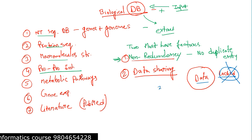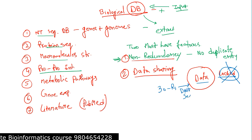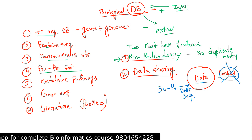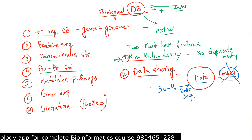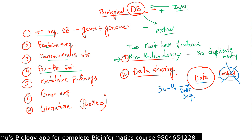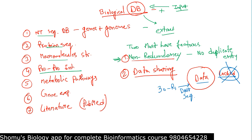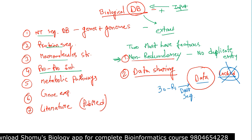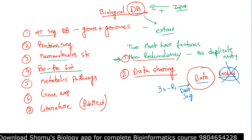For example, a group of 30 scientists put some DNA sequencing data into a database, and five years later another group finds something wrong with the earlier data — they should be able to update it. That is data sharing. So a database is a collection of data which is structured, searchable, and updatable periodically — that is a biological database.